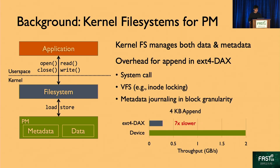For example, in ext4dax, an append operation incurs a system call overhead to trap into the kernel, the VFS overhead such as inode locking, and inefficient metadata journaling in the granularity of four kilobyte blocks, causing high write amplification. As a result, for 4KB append, ext4dax is seven times slower than the device bandwidth.